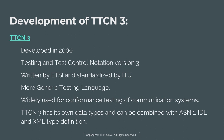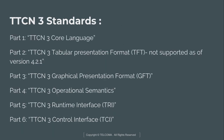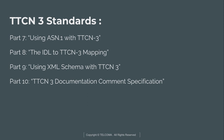These are the three versions: TTCN-1, TTCN-2, and TTCN-3, whose name changed to Testing and Test Control Notation Version 3. The TTCN-3 standards are divided into 10 parts: Part 1 is the core language, Part 2 is the tabular presentation format, Part 3 is the graphical presentation format (GFT), Part 4 is operational semantics, Part 5 is the runtime interface TRI, Part 6 defines the control interface TCI, Part 7 covers use of ASN.1 with TTCN-3, and Part 8 defines the use of IDL to TTCN-3 mapping.